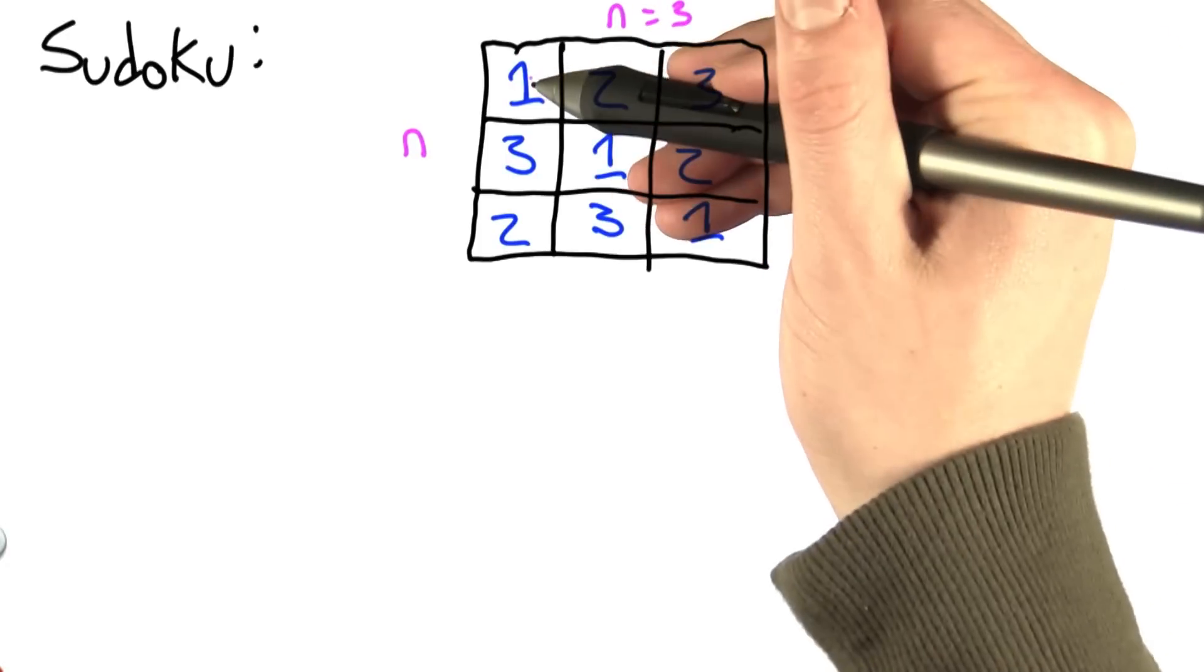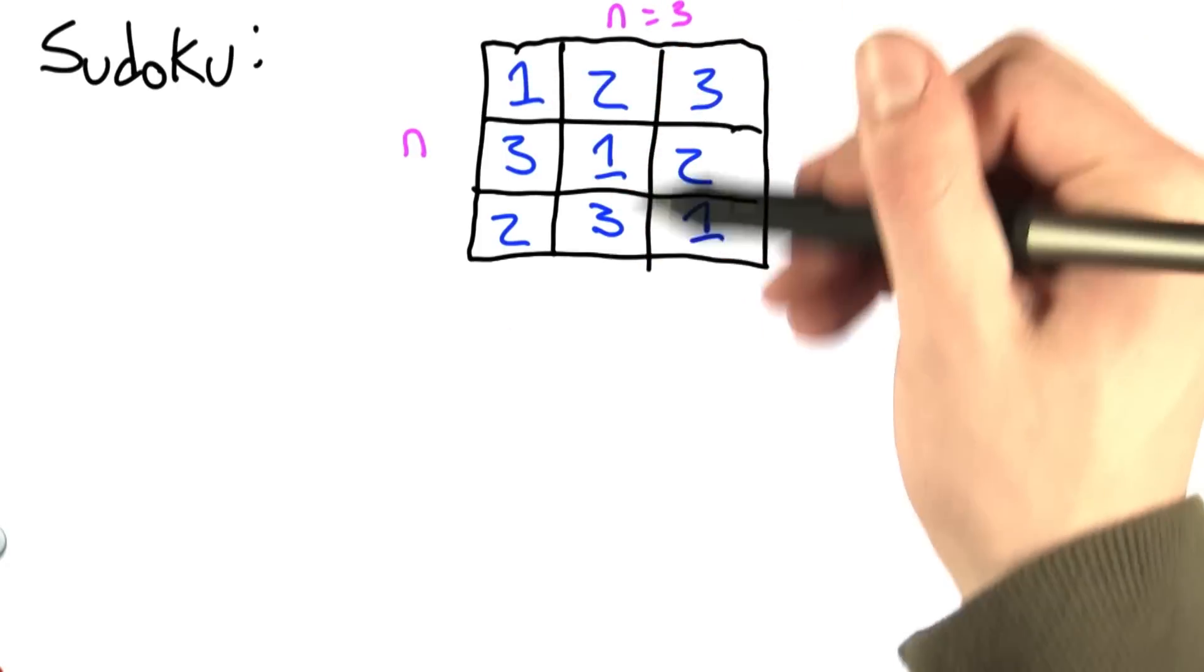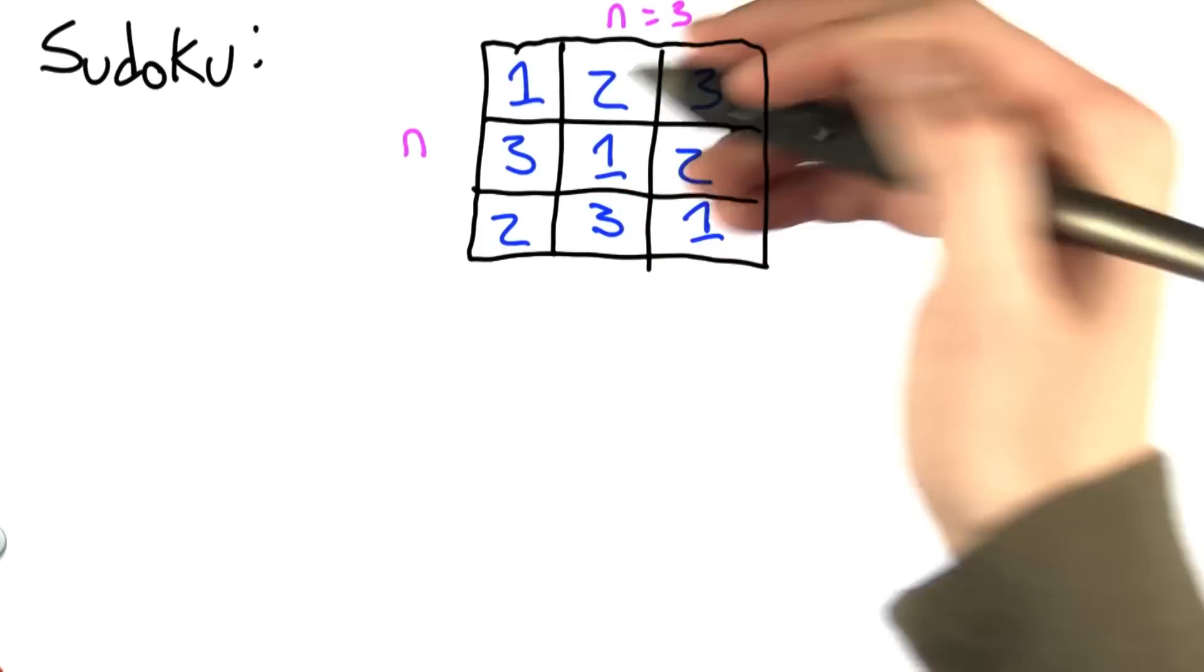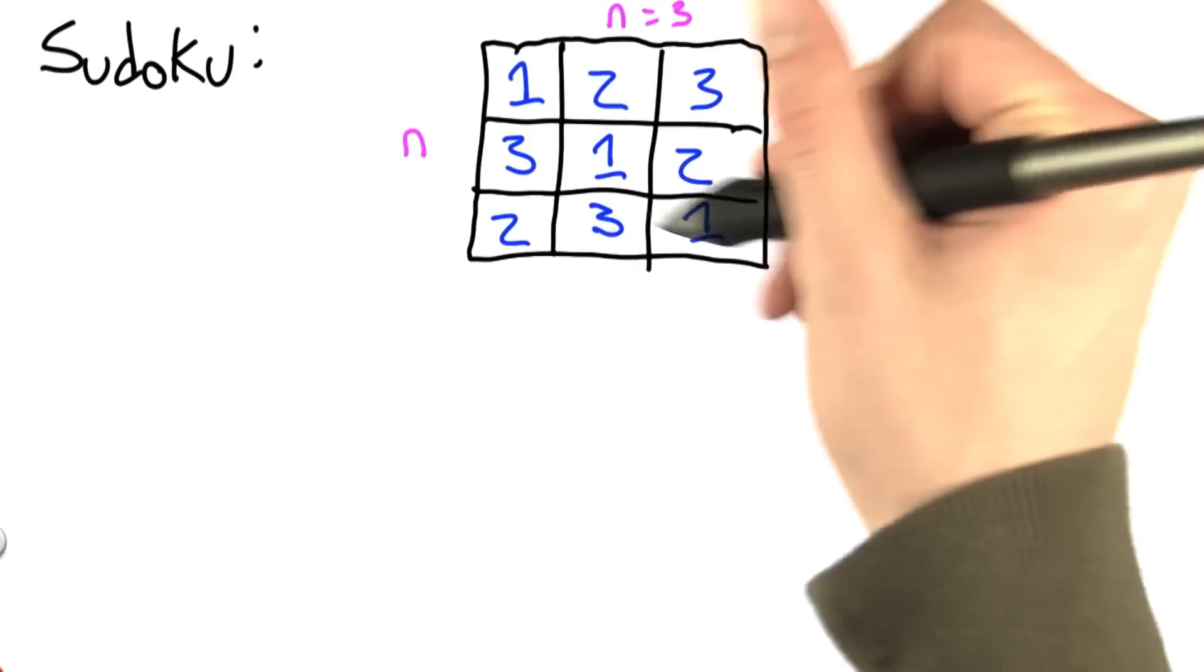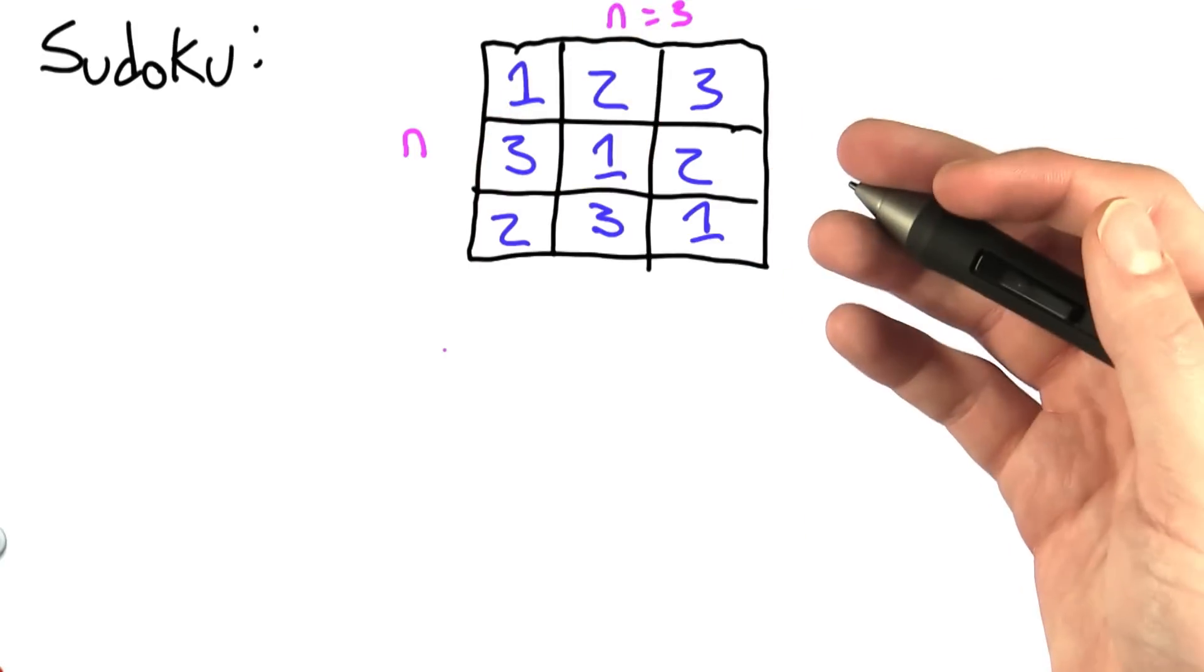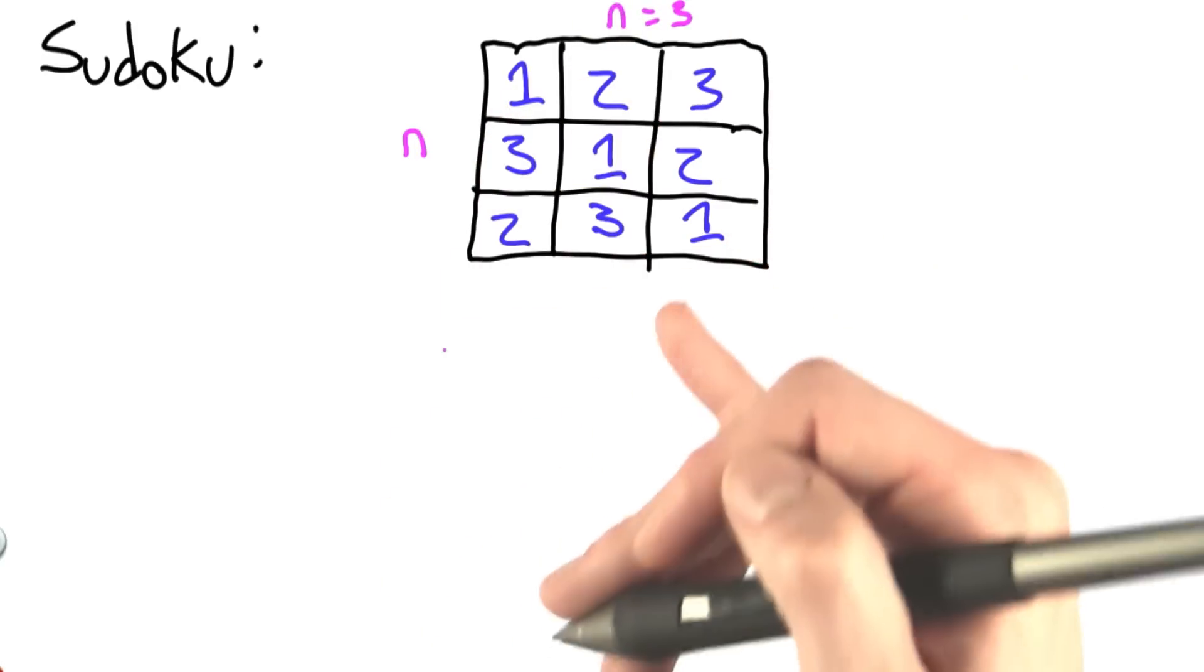So in this example, the 1 appears once in this column, once in this column, once in this column, once in this row, once in this row, and once in this row. We can repeat that check for every digit in the grid.